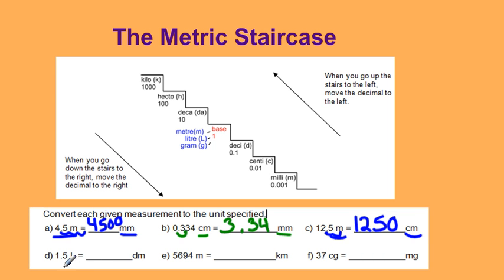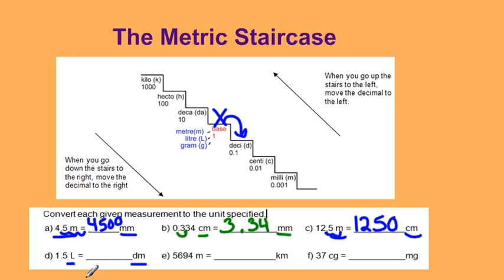I have 1.5 liters — that's a base unit — and I'm going all the way down to deciliters. Starting at my base, I'm moving one stair down. Remember, if we're going down the stairs our decimal goes to the right, so one spot: 1.5 liters is 15 deciliters.